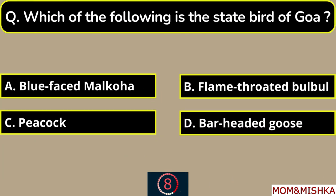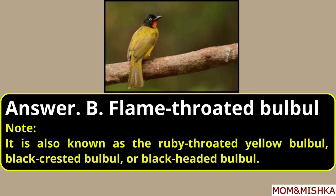Which of the following is the state bird of Goa? It's the flame-throated bulbul, option B — also called the ruby-throated yellow bulbul, black-crested bulbul, or black-headed bulbul.